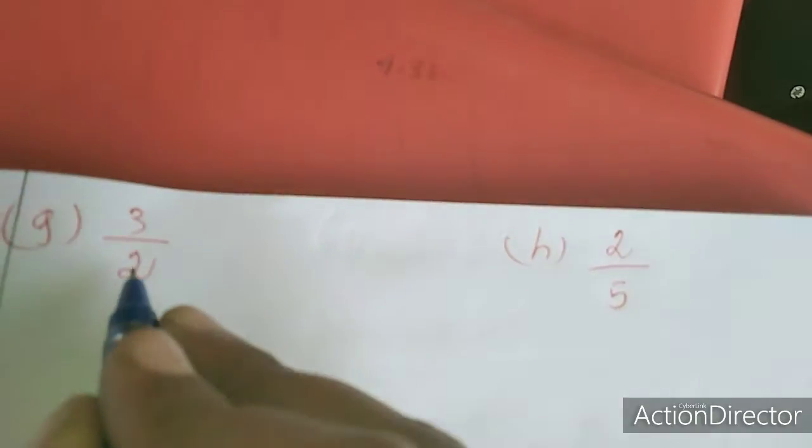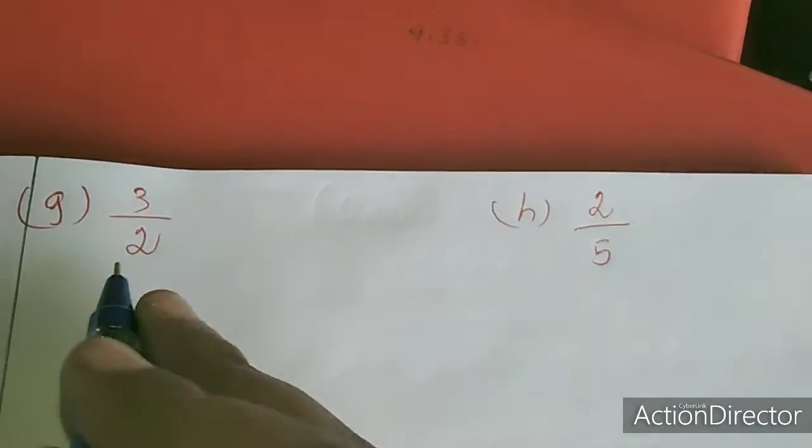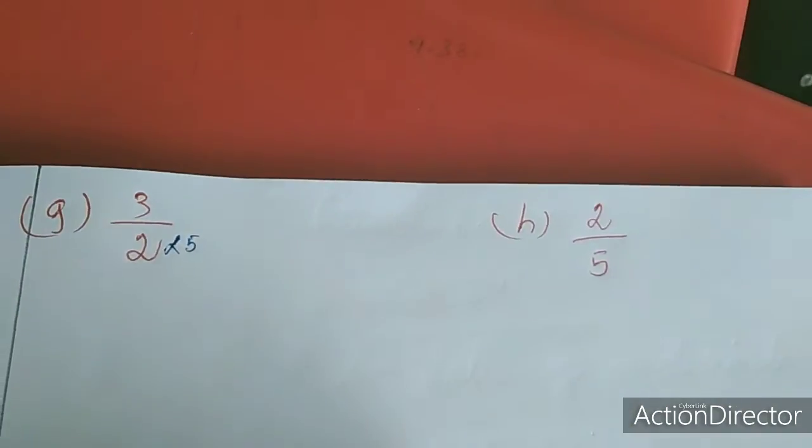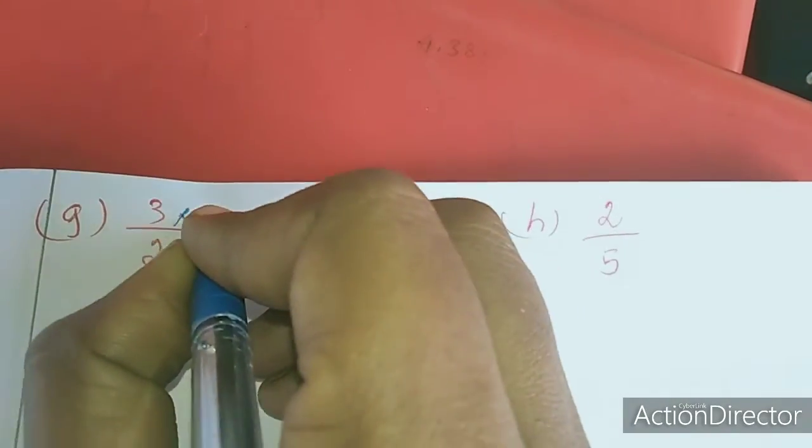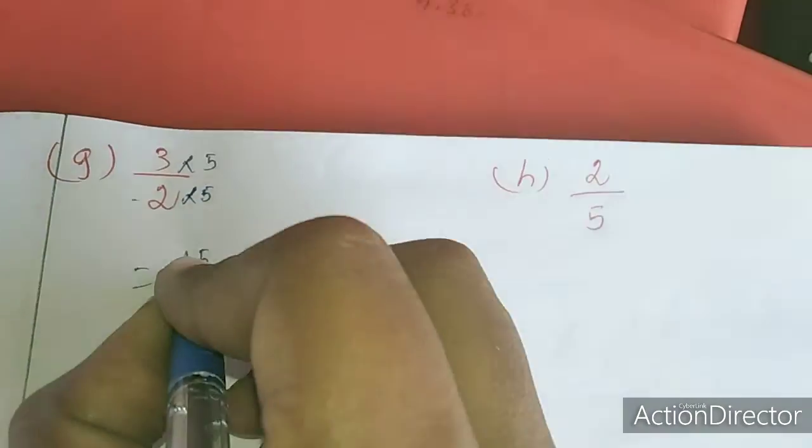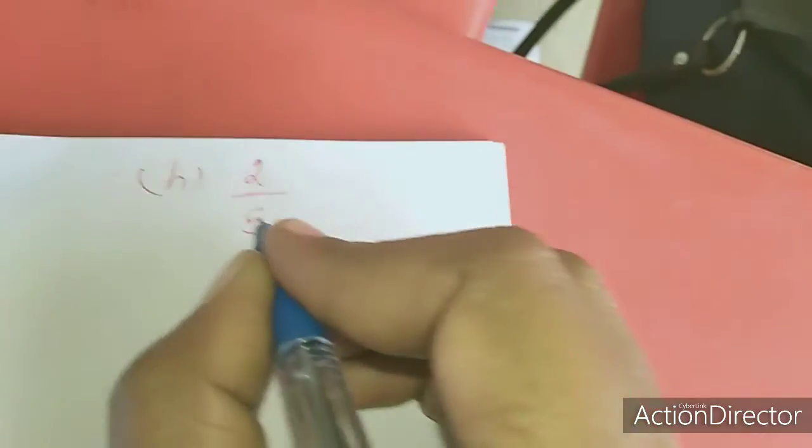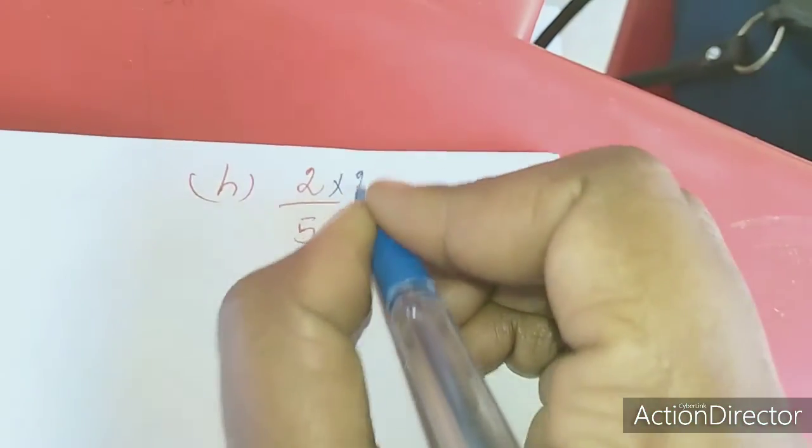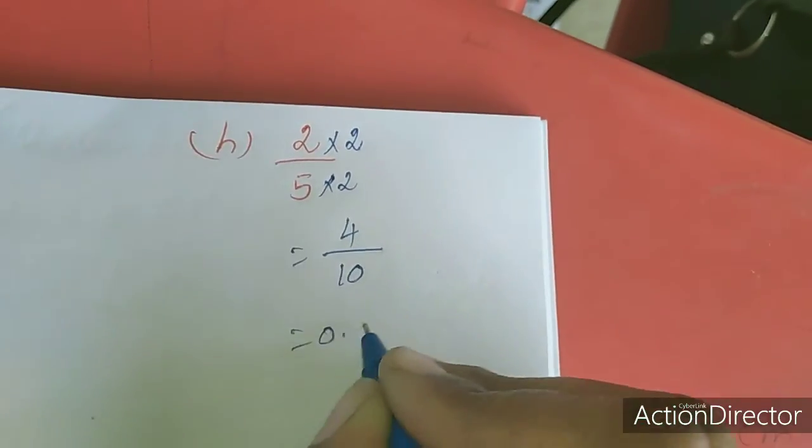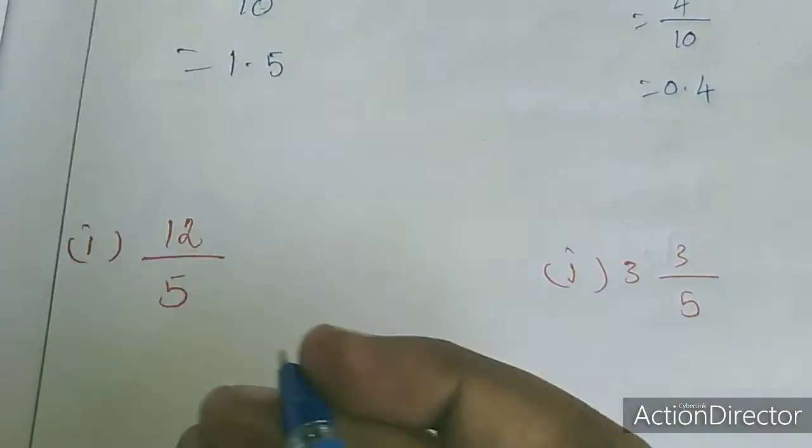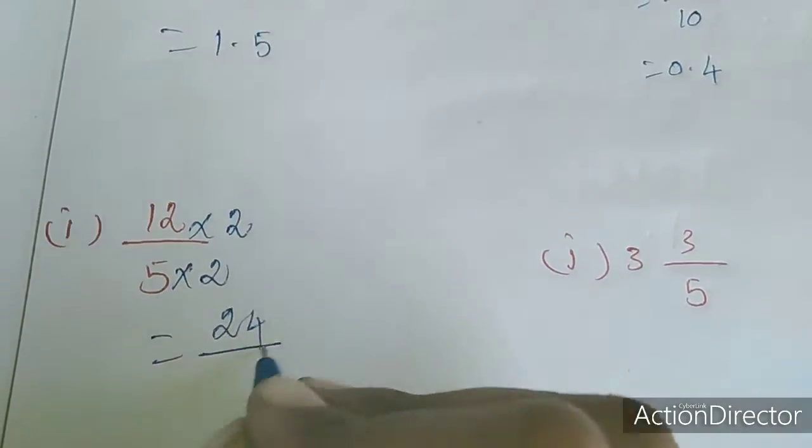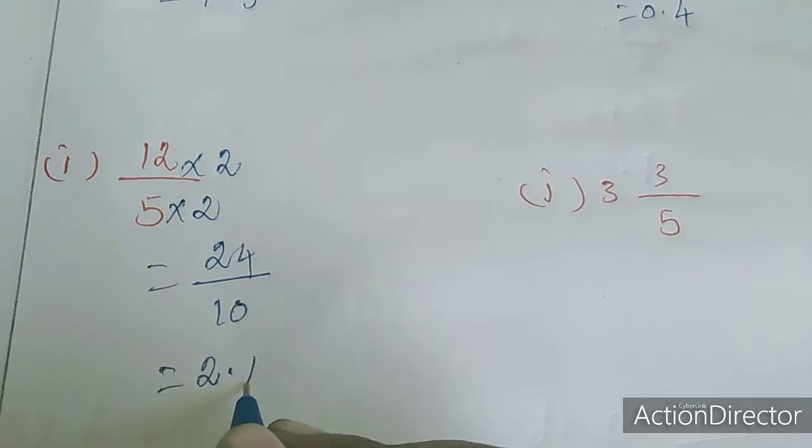Now next is 3 by 2. To convert to decimal, we multiply by 5 to make denominator 10. So 3 by 2, multiply both by 5, gives 24 divided by 10. One digit after dot, so 2.4.